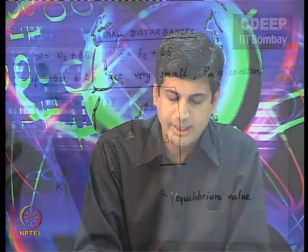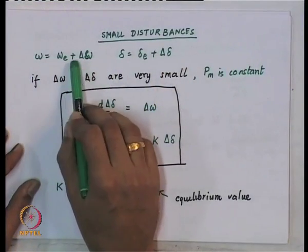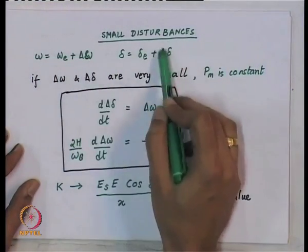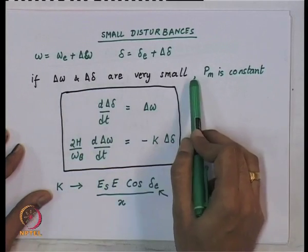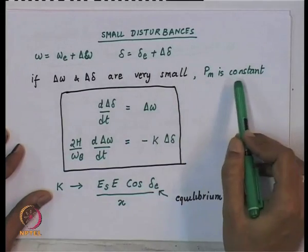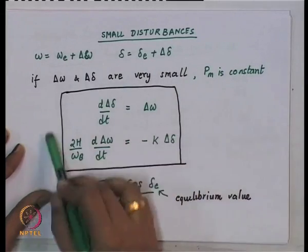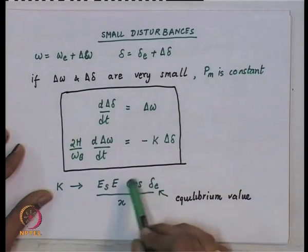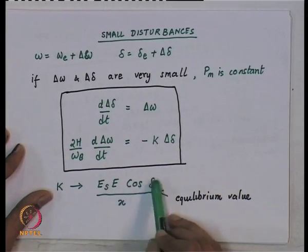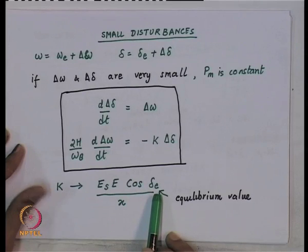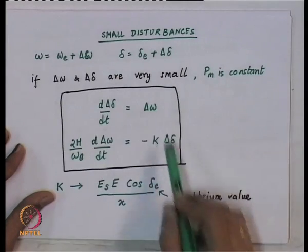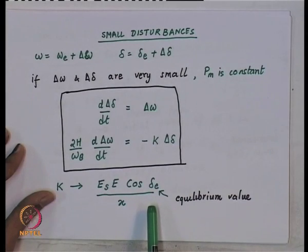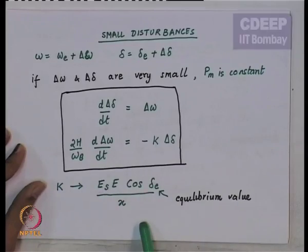Looking again at what we did: we assumed small deviations around the equilibrium, so delta-omega and delta-delta are very small. P_m is a constant. We obtained a linearized model where k was E_s·E·cos(delta_e)/x, where delta_e is the equilibrium value. So if you are studying deviations around an equilibrium (delta_e, omega_e), then k would be this. After that, we obtained the response for small disturbances.